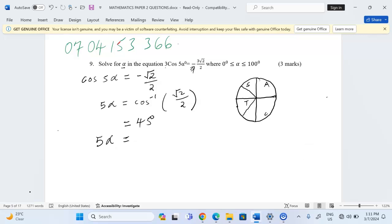So 45 in the second quadrant is equal to 180 minus 45, giving us 135. And the next angle is 180 plus 45, giving us 125.